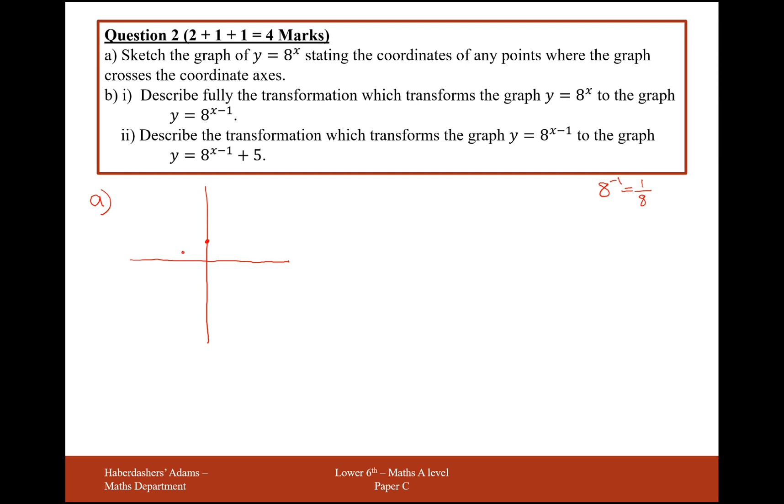So this is 1/8, quite small quite quickly. 8^(-2) would be 1/8^2, which is 1/64. And you can see that as x gets more and more negative, it's going to give us a value of 1 over something large, so that's going to lead it towards the 0 marker.